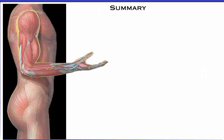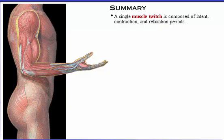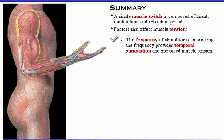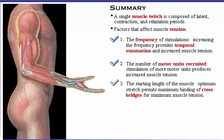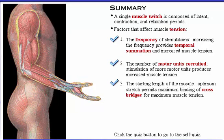Here's a summary of what we've covered. A single muscle twitch is composed of latent, contraction, and relaxation periods. These are the factors that affect muscle tension: 1. The frequency of stimulations — increasing the frequency provides temporal summation and increased muscle tension. 2. The number of motor units recruited — stimulation of more motor units produces increased muscle tension. 3. The starting length of the muscle — optimum stretch permits maximum binding of cross-bridges for maximum muscle tension. To test your knowledge, click the quiz button to go to the self-quiz.